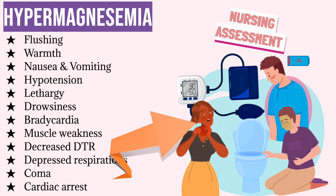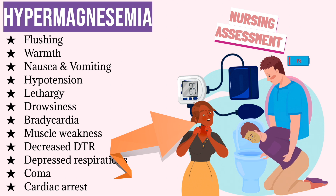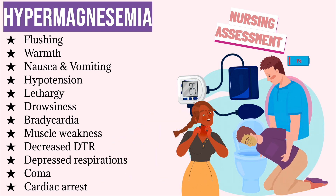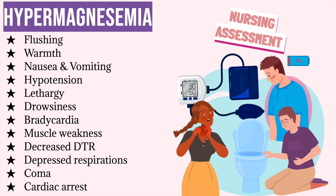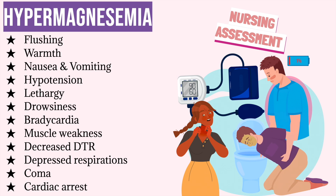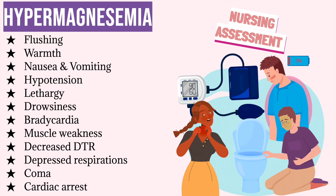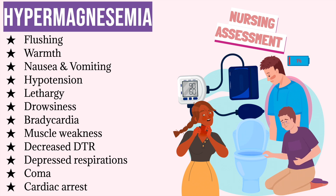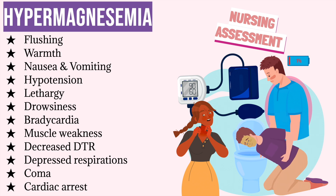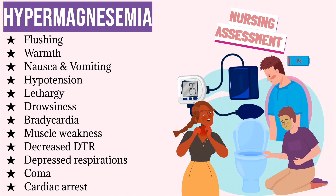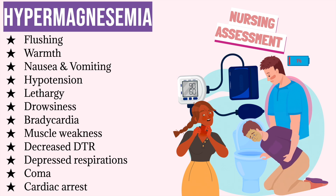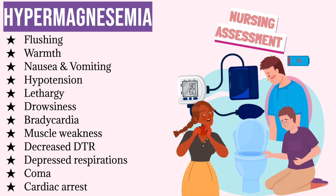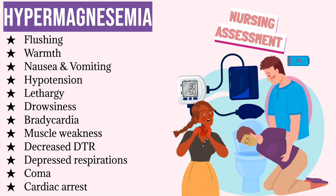When you assess the patient with hypermagnesemia, you may find flushing of the skin — redness of the face, neck, and upper chest due to increased blood flow — and skin may also be warm to the touch. Remember that magnesium is a sedative, so too much magnesium is going to slow everything in the body down, causing symptoms such as nausea and vomiting, muscle weakness, lethargy, bradycardia, drowsiness, decreased deep tendon reflexes, respiratory depression, coma, or cardiac arrest if the hypermagnesemia is severe.